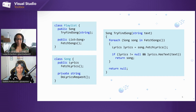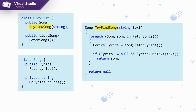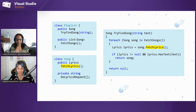So we have this TryFindSong, and then we're trying to fetch the songs, which basically calls within the playlist. You can see that we are basically trying to fetch the songs, and for each song in whatever we were able to fetch, we will then fetch the lyrics. After fetching the lyrics, we compare and see if it has the text. If it has the text, it's the song that was stuck in my head, and then we return it. That's basically how we address the problem of finding this particular song.